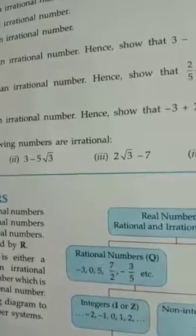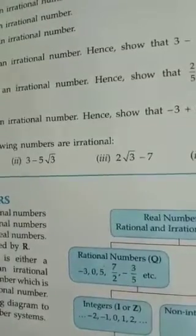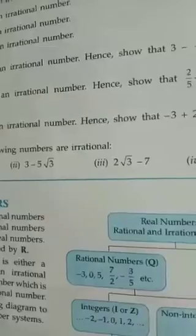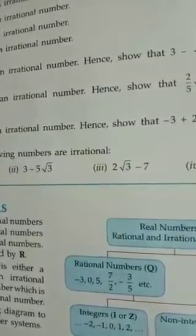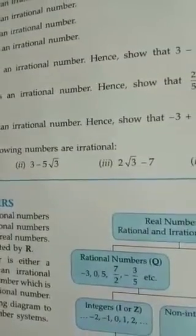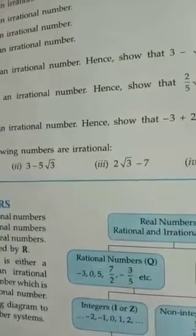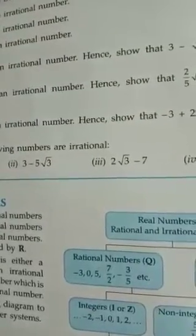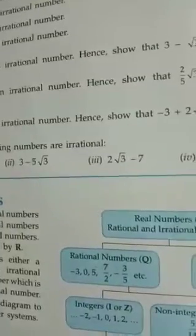The third property: if a and b are two real numbers, the product, that is a into b, is also a real number. And the fourth property tells: in the case of division, if a and b are any two real numbers, then a by b is also a real number.